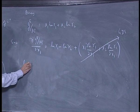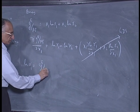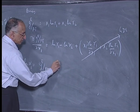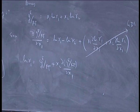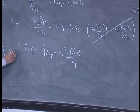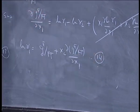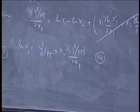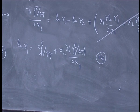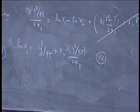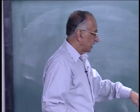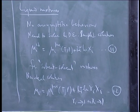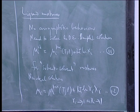So G_xs for a binary gives x_1 log gamma_1 plus x_2 log gamma_2. Then I differentiate: partial of G_xs by RT with respect to x_1 is log gamma_1 minus log gamma_2, and this term is 0 because of the Gibbs-Duhem equation. I just have to solve these two equations algebraically. When we did the last equation, we really got an expression for G_xs, not for delta G. So we have to solve this. The models for solid mixtures are identical.